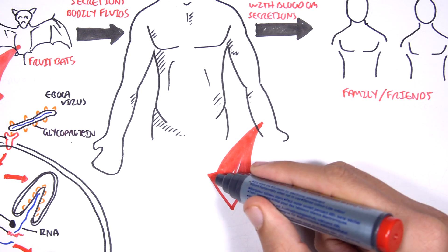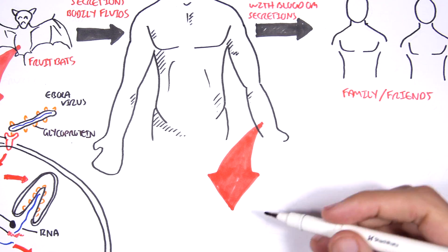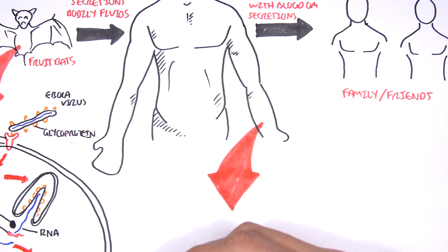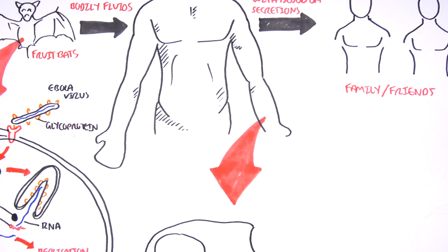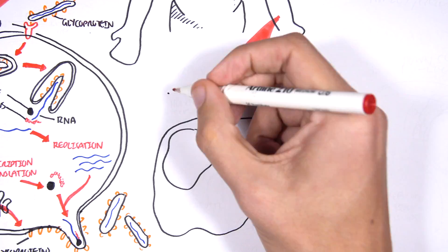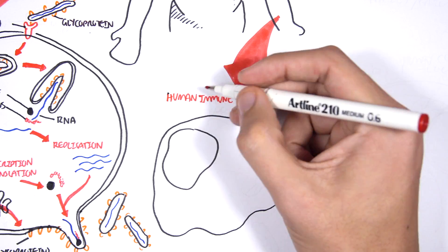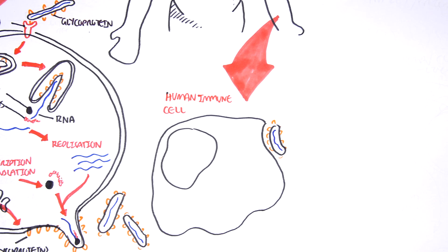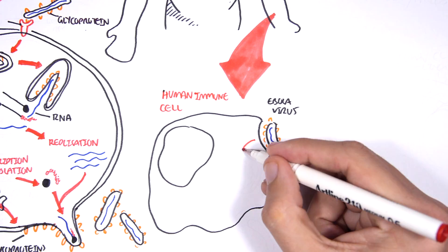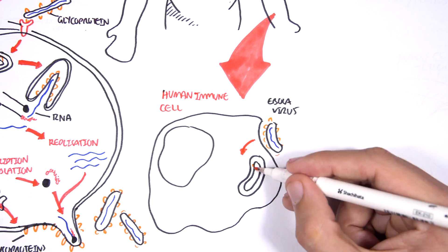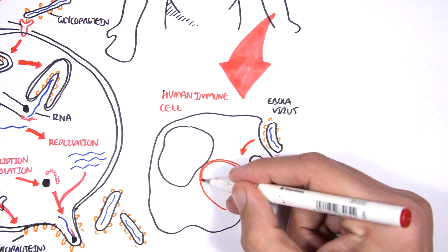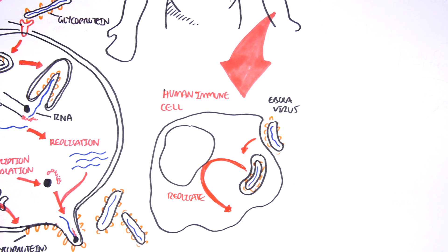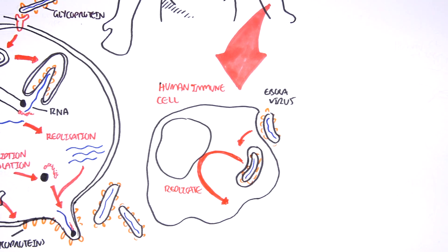Let's look at how the Ebola virus can infect a human. Here we're looking at an immune cell. Immune cells help defend against viruses, infections, and other foreign bodies. The Ebola virus can be eaten up by the immune cells. However, within the immune cell, the Ebola virus can somehow replicate.